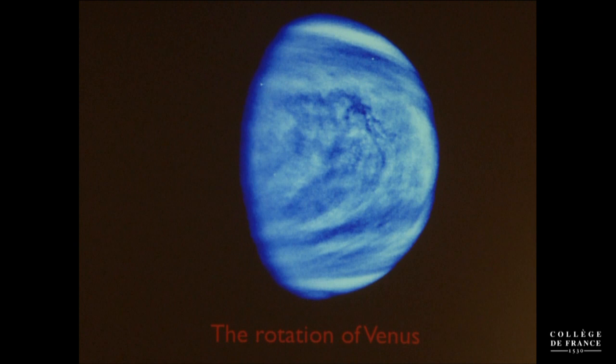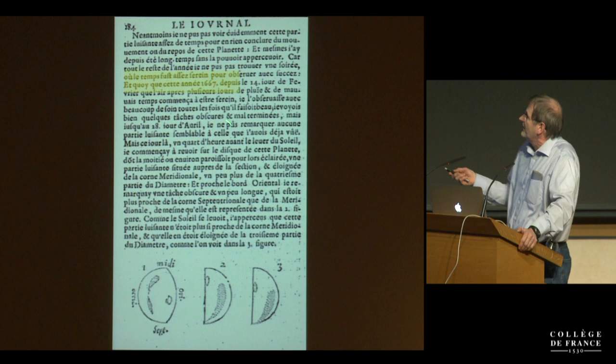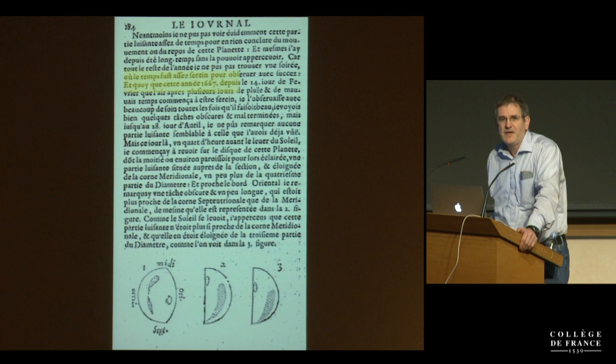I will speak a little about the history of the observation of Venus in particular, because it's a really nice case. Very often, as a theorist, observers will tell you that only observation counts. But in fact, observation is always done with a preconceived idea, and the observation can be totally wrong if you have a false theoretical background. A good example is the history of the observation of the rotation of Venus.